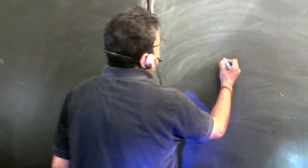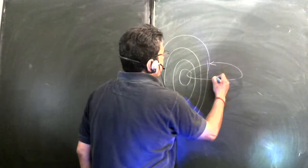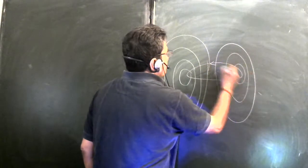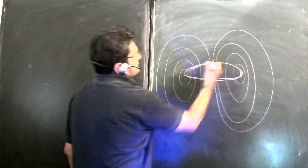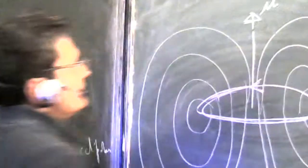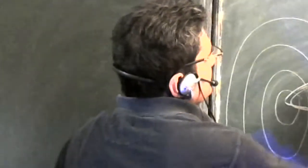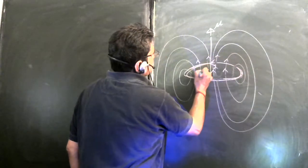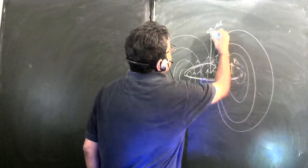Now let us consider the case of a magnetic dipole — the behavior is completely different. If this is a coil having current in this direction, then the magnetic field produced by it would be like this — these are the magnetic field lines. If the current is in this direction, we know by the right-hand thumb rule this is the direction of the magnetic dipole. The direction of the magnetic field inside the dipole is the same direction.